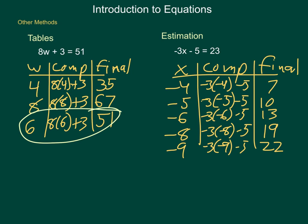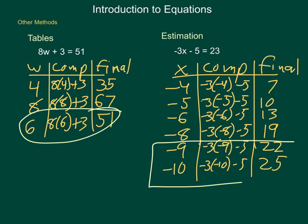Negative 10, negative 3 times negative 10 minus 5. That's 30, minus 5 is 25. So we have now a number that falls on either side. Our actual answer, in order to get this 23 that we were looking for, has to be somewhere between negative 9 and negative 10. And that's where the estimation piece comes in. We don't, at this point, have an exact answer, but we know it's between negative 9 and negative 10.